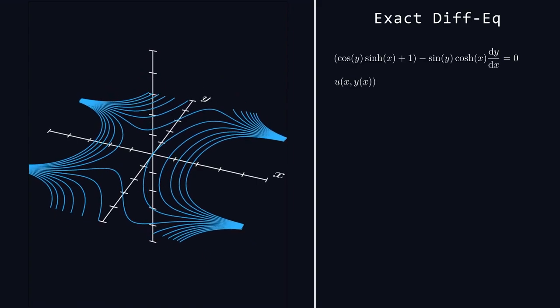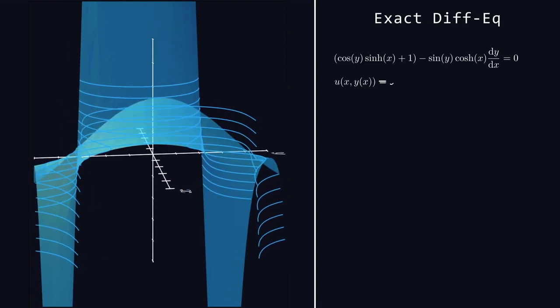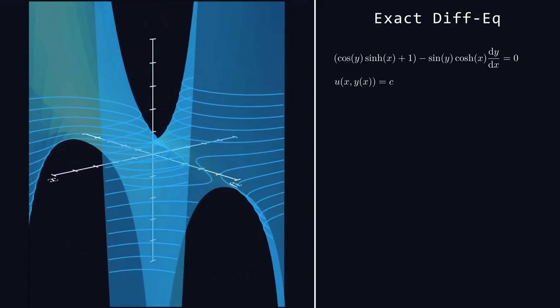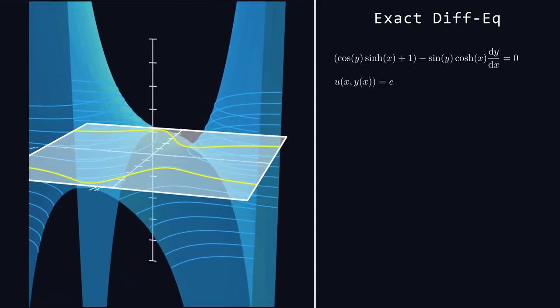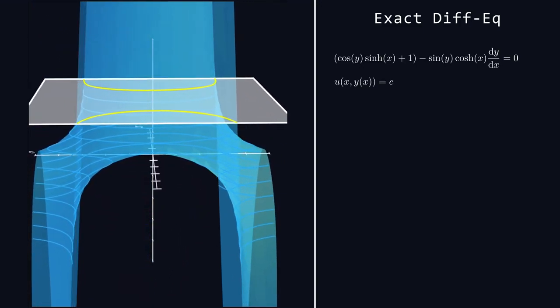Then if we set that very hypothetical 3D function—we'll call u(x,y)—to a constant, which by the way you might think of as a plane slicing through the surface based on some initial condition, we arrive at an implicit solution. But the critical question here is how do you find u(x,y) in the first place?